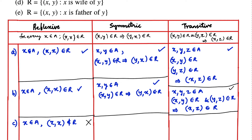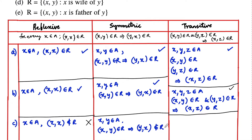Coming to symmetric: if x and y belong to A and x is 7 centimeters taller than y, this implies that y is 7 centimeters shorter than x, which means (y, x) does not belong to r. So it does not satisfy the relation, and hence this is not symmetric.